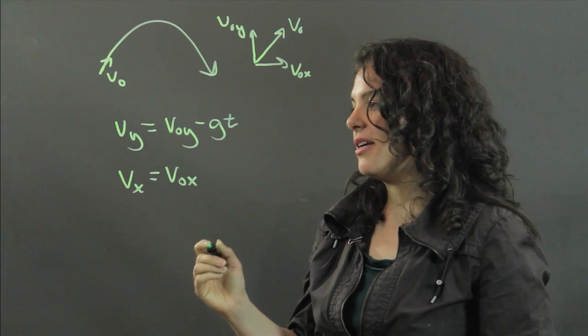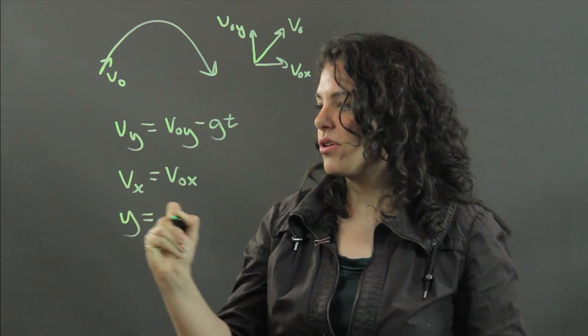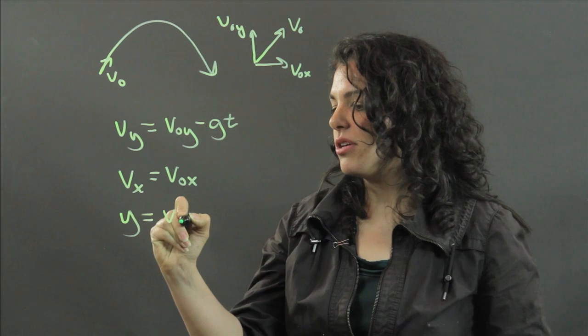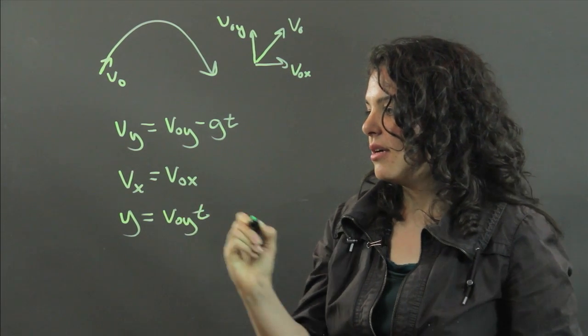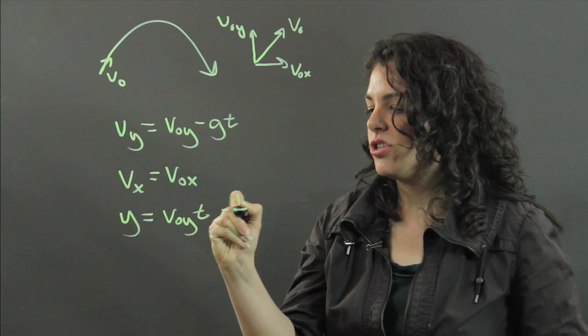Then to find y, which would be your vertical placement, you can use v0yt minus one half gt squared.